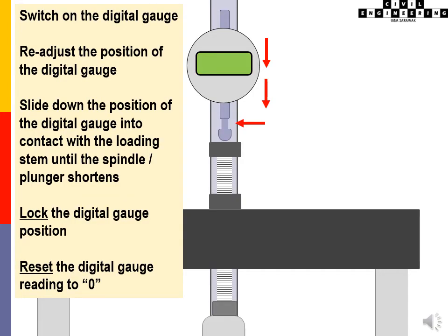Switch on the digital gauge. Re-adjust its position. Slide down the position of the digital gauge into contact with the loading stem until the spindle shortens. Lock the digital gauge position and reset the reading to zero.